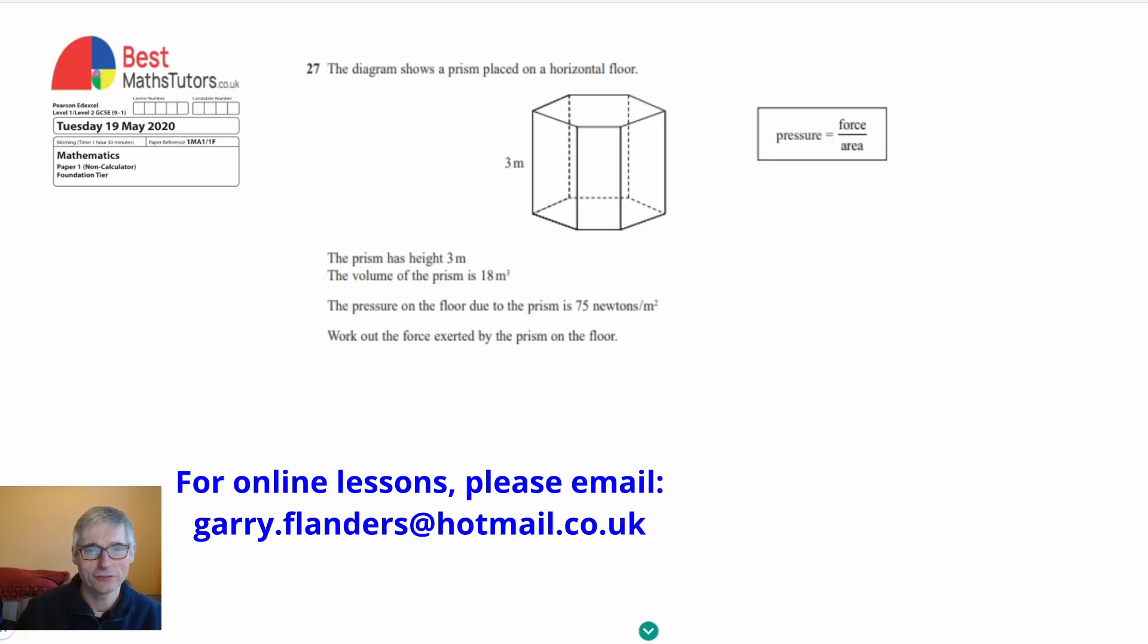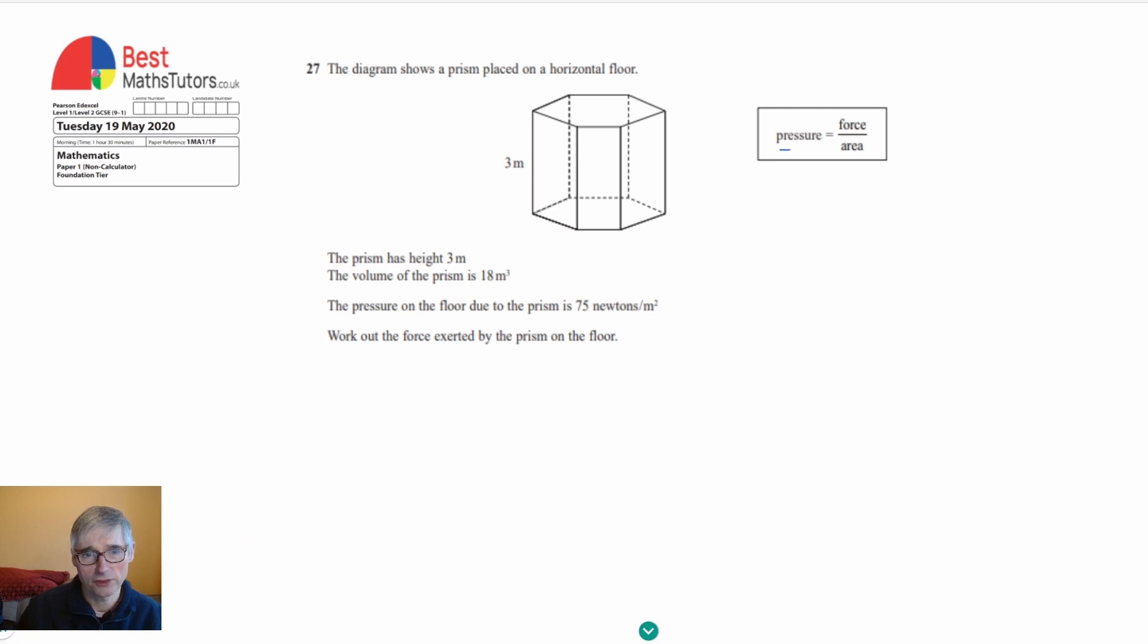This is question 27, a question involving pressure, force, area, and rearranging equations. We can see this prism is placed on a horizontal floor, and we know the formula: pressure equals force divided by area. What we need to work out is the force exerted by the prism on the floor.